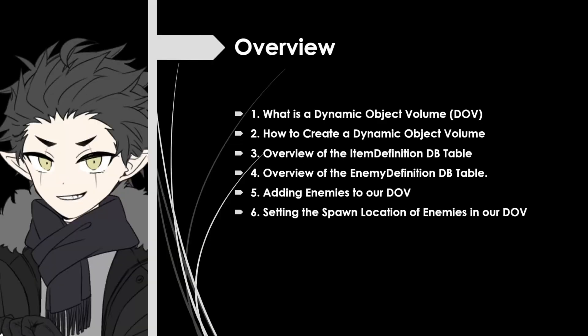For this video, first we're going to discuss what a dynamic object volume is. Once we've defined it, we'll go over how to create a dynamic object volume and add it to our level. Next we'll go over the item definitions table and the enemy definitions table, so we know what kind of items and enemies we can add to a DOV, and how to add items to that list. Then we're going to add enemies to our DOV and set the spawn location for those enemies.